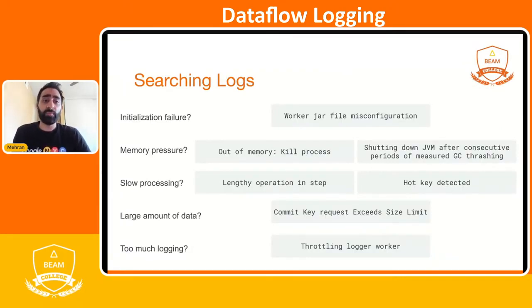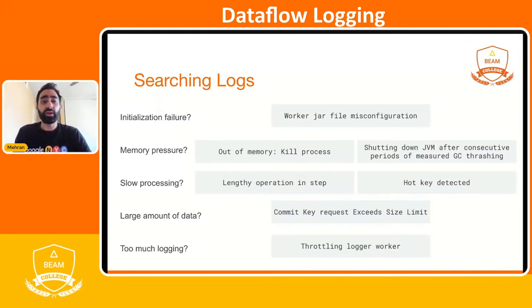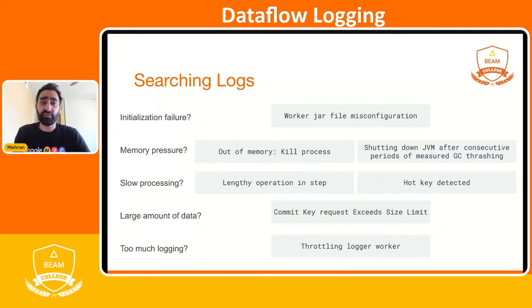Let's look at a few common errors and logs that usually point to a symptom of your job falling behind. If you have an initialization failure where we aren't able to read your JAR file, you might see a worker JAR file misconfiguration log. If you have memory pressure — a very common issue with undersized pipelines — you might see an out-of-memory error or a VM being shut down due to garbage collection thrashing.